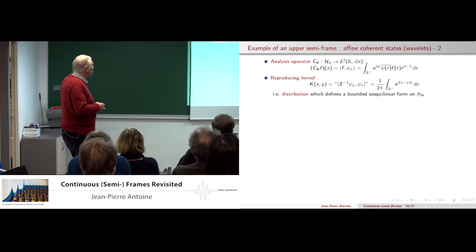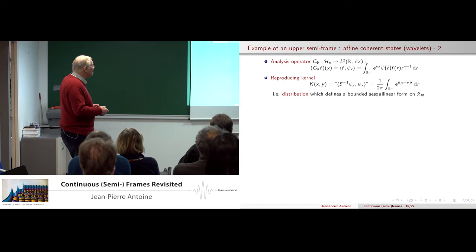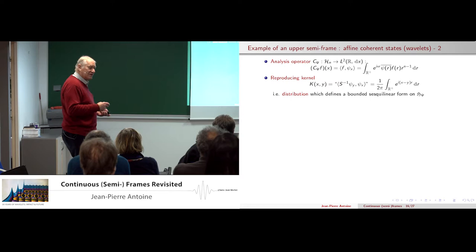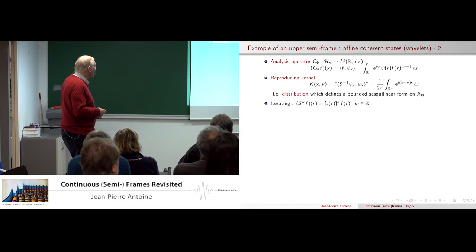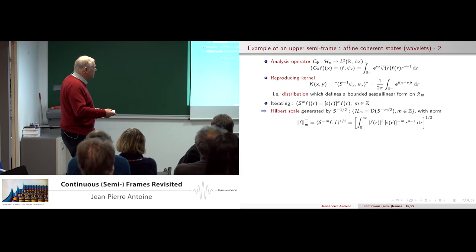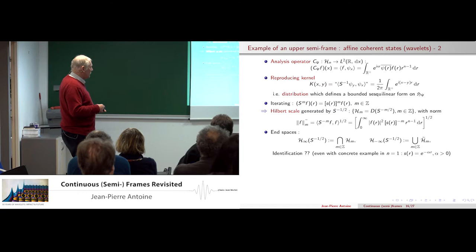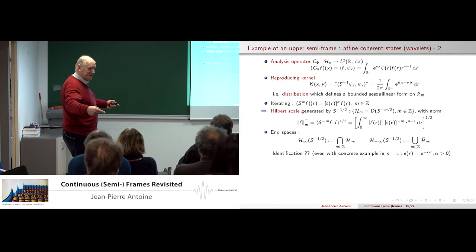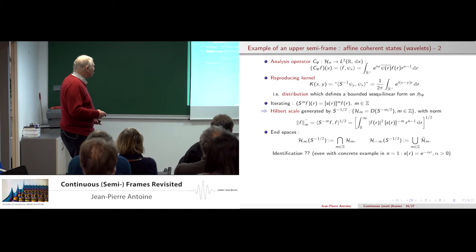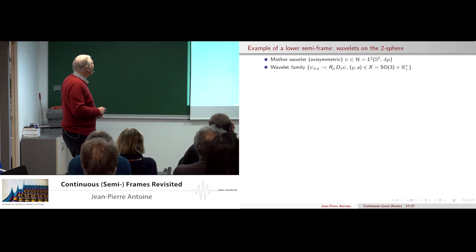You can compute explicitly the analysis operator and the reproducing kernel — but in most cases it is not a function, it is a distribution. The integral of e to the power X minus one times R on the half-line is a well-defined distribution, which means you have to work with sesquilinear forms, not operators, because distributions allow conditions on both sides of the form. You iterate and find everything explicitly — all the powers of the function S(R) keep appearing. When you have this kind of scale you always ask what happens at the end: if you take nice functions you get Schwartz space and Schwartz distribution space as canonical examples. What happens here? We don't know — even on the simplest example we could not identify the space, and neither could the experts we consulted.